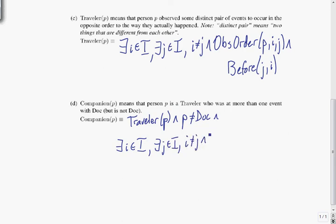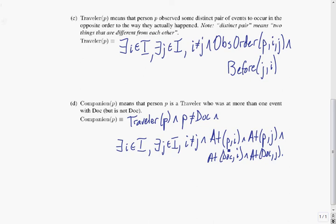And okay. So we have two events that are different from each other. And p was at both of those events. And Doc was at both of those events. So At(p, i) and At(p, j) and At(Doc, i) and At(Doc, j). Let's make sure we've set everything here. Well actually let's start by checking our variables. So our parameter p should be unbound. And it is. And we shouldn't have any other unbound variables. So i and j are only used inside here. And they're bound by these quantifiers. So that's all good. We do have Doc in here. But Doc is not a variable. Doc is a particular person in the world. So that's okay to use. And it looks like that's good.